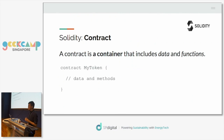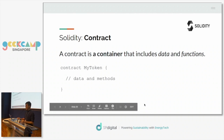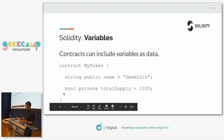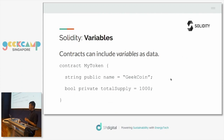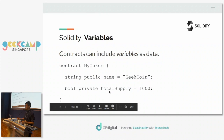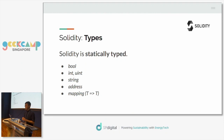Let's take a closer look at each component of the Solidity syntax. First is the contract — it's a container that includes data and functions. Think of it like a class in object-oriented languages: a container that holds variables and functions. In this sample code I have a contract called MyToken with some data and methods. It has variables: name is a string, there's a boolean, and total supply is set to 1000.